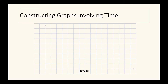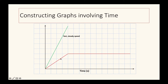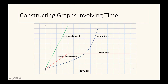We're not actually going to construct a graph in this video - we'll go through what different types of graph mean and how to answer exam questions. A line going quite steeply upward shows a fast steady speed. A less steep diagonal line shows a slow steady speed. When the line becomes horizontal, the object is stationary - it means it's staying still.